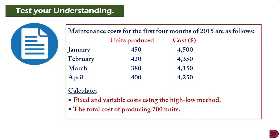In January, 450 units were produced at a total maintenance cost of $4,500. February: 420 units, cost $4,350. March: 380 units, cost $4,150. April: 400 units, cost $4,250. We are to calculate the fixed and variable cost using the high-low method and then the total cost of producing 700 units.